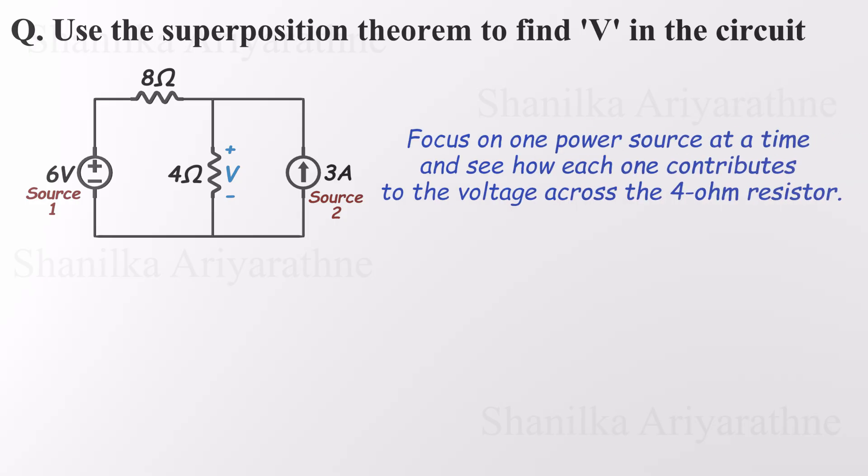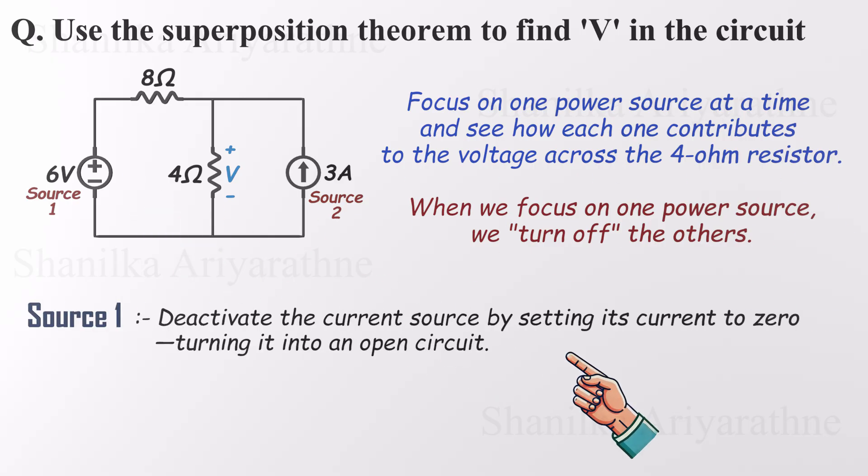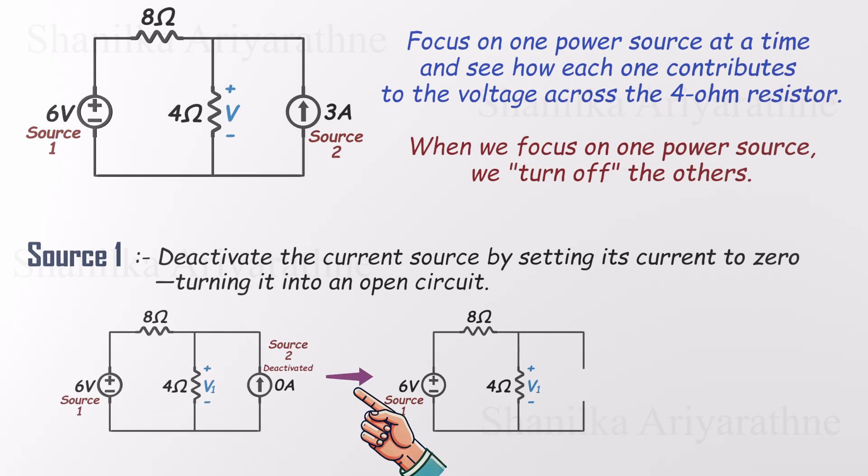Focus on just one power source, see how it affects the 4-ohm resistor, then move on to the next. When we focus on one source, we turn off all the others. Let's start with the voltage source. To isolate it, we need to deactivate the current source. That means setting its current to zero, turning it into an open circuit. Basically, we just disconnect that branch. Now with only the voltage source active, the circuit becomes much simpler.